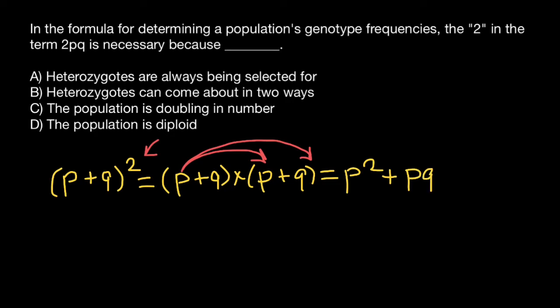And then q times p is going to be qp. And then q times q is going to be q squared. And we can simplify.